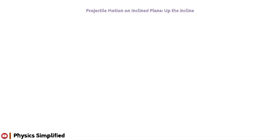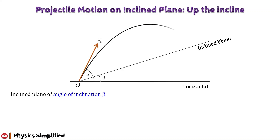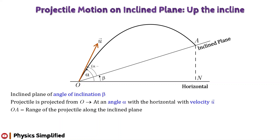Topic of discussion for today's video: Projectile Motion on an Inclined Plane — the motion is up the incline. Let us consider a plane inclined at an angle β with the horizontal. A projectile is projected from the foot of the inclined plane, i.e., from point O with velocity vector u at an angle α with the horizontal. The projectile strikes the plane at point A, from where we have dropped a perpendicular AN on the horizontal line. The distance OA represents the range of the projectile along the inclined plane. According to the figure, the angle made by vector u with the inclined plane is α−β.